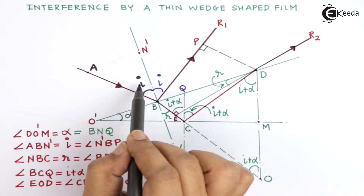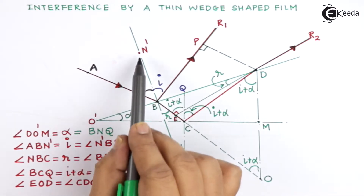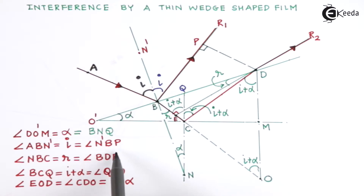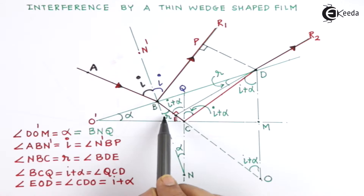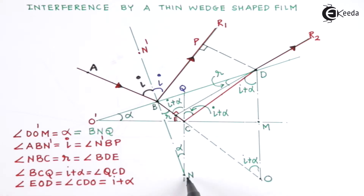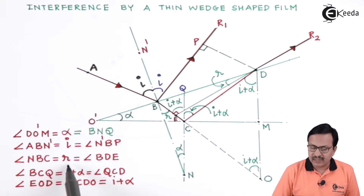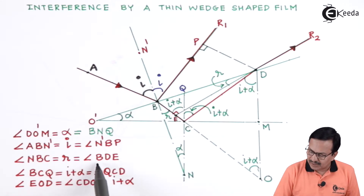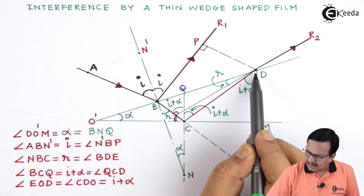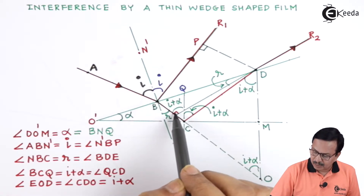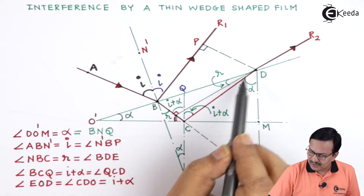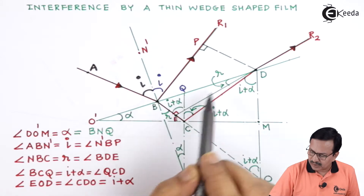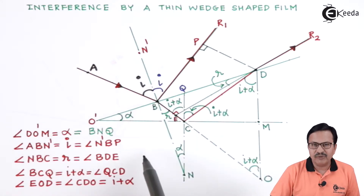Angle ABN' is equal to I, the angle of incidence, which is also equal to angle N'BP. After refraction, angle NBC is the angle of refraction. By geometry, drawing a perpendicular, this angle is also going to be equal to angle BDE, which equals the angle of refraction.